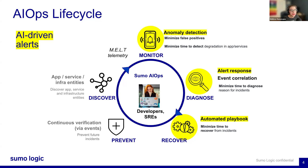When looking at the telemetry data, you're basically looking at the various data types, including metrics, events, logs, and traces — that's where the MELT telemetry comes from. That data forms the foundation for detecting anomalies and generating alerts.